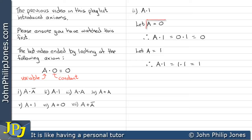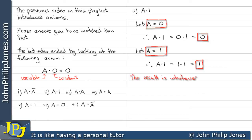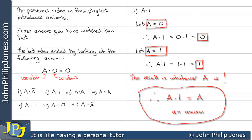When A was zero the result was zero, and when A was one the result was one. The result, if you look closely, is whatever A is. Consequently, A AND one will always give whatever A is, and this is an example of an axiom.